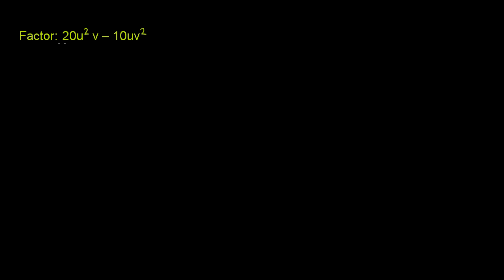So what is 20u squared v if we factor it out? If we do the prime factorization, 20 is 2 times 2 times 5. That's 2 times 10, that's 20. u squared is times u times u.